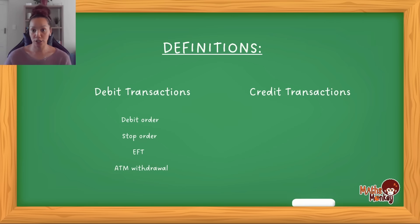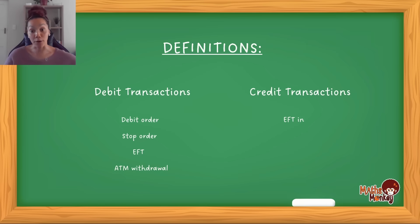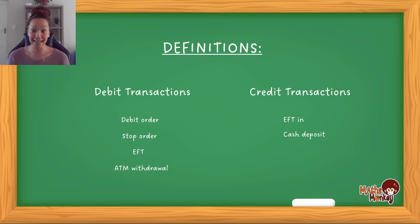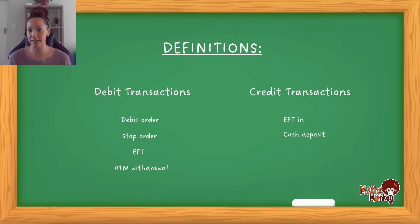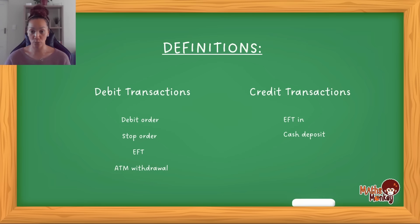Then we have credit transactions — this is money that can come into your account. Somebody can send you an EFT, which is now where you're receiving money — an electronic transfer from their account into your account — so that will be considered a credit transaction. Then somebody can make a cash deposit, meaning they take cash to the bank and deposit it, and the bank then adds it to your account. Other things that can increase your account would be like your salary, but most of the time salaries are also paid by EFT — other institutions or your company paying money into your account.